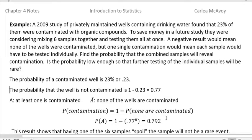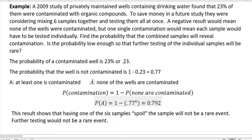And what that's telling me is that 79 percent of the time, about, we will get a six sample mixture that will be contaminated. And that means that we have to then go back and do some further testing on those samples. So this result shows that having one of the six samples spoil the sample will not be a rare event. It will happen pretty frequently. And then further testing would be required. So that would not be rare.